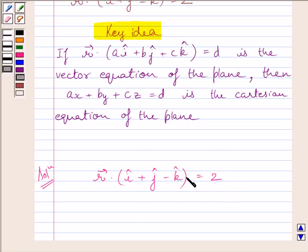Now, if we compare these two equations, then we get value of A is equal to 1, value of B is equal to 1, and C is equal to minus 1. Also, D is equal to 2.